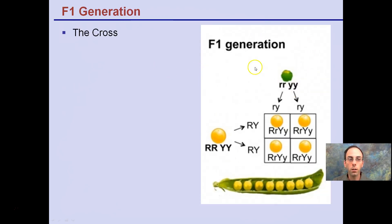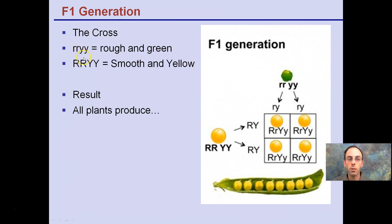Providing this with a little bit of a picture here. The cross, this is the homozygous recessive individual, this is rough and green, crossed in this case with homozygous dominant smooth and yellow. The result is all plants will produce this heterozygote here, and we see that example here.